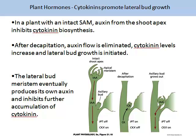Cytokinins promote lateral bud growth. In a plant with an intact shoot apical meristem, auxin from the shoot apex inhibits cytokinin biosynthesis. After decapitation, auxin flow is eliminated, cytokinin levels increase, and lateral bud growth is initiated. The lateral bud meristem eventually produces its own auxin and inhibits further accumulation of cytokinin. After this lecture, please review the wheat practical where shoot apical meristems were removed, and consider whether your results correlate with the observations on cytokinin presented here.